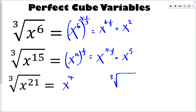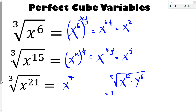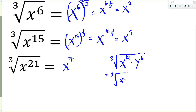Now if you had something a little more complicated — maybe x to the 12 times y to the 6 — this is really no different. If you get multiple things underneath the root, all you need to do is treat these individually. So: cube root of x to the 12 individually, and then cube root of y to the 6. 12 is divisible by 3, so the cube root of x to the 12 is x to the 4. And the cube root of y to the 6 — 6 divided by 3 is 2 — so y squared.